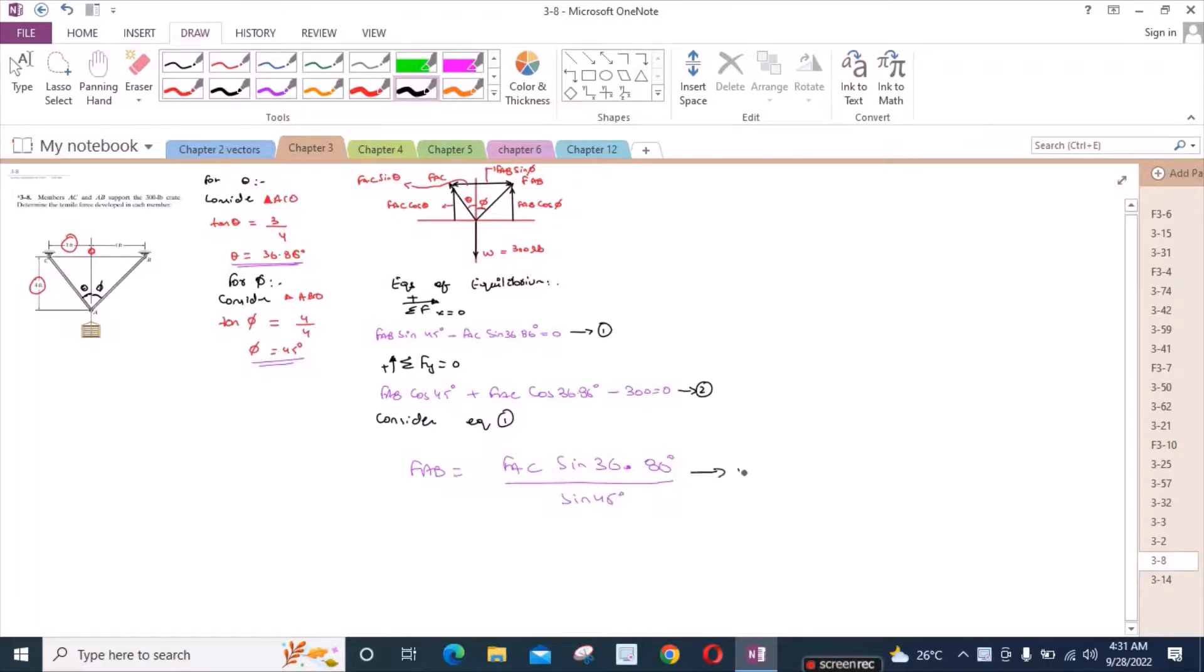If we put it in equation 2, then equation 2 would become FAC sin 36.86 degrees divided by sin 45 cos 45 plus FAC cos 36.86 degrees minus 300 equals to zero. From here, cos 45 and sin 45 have the same value, they will cancel out. So from this equation, 1.4 FAC equals 300, FAC is equal to 214.3 pounds.